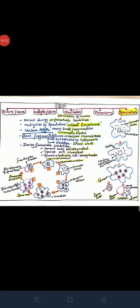Good morning, children. Last class we completed up to plasmatomy under the topic of fission. Today we are going to learn sporulation, one among the types of fission, and we are also going to start other modes of asexual reproduction.